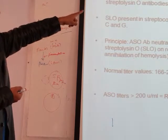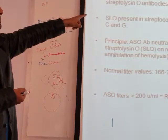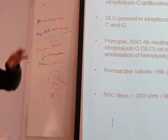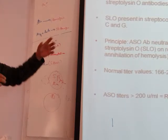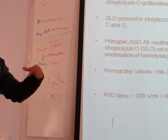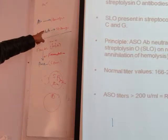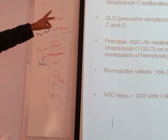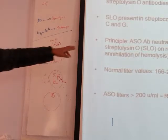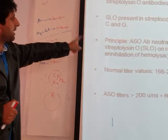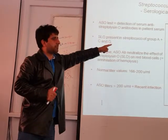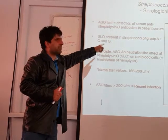The ASO test is basically detection of serum Anti-Streptolysin O antibodies in the patient's serum. When the patient has the infection, the body produces these antibodies. If we find this antibody present in the patient, it means the patient has a pyogenic infection. ASO — Anti-Streptolysin O — is present in Group A streptococcus pyogenes, and also in Group C and Group G.